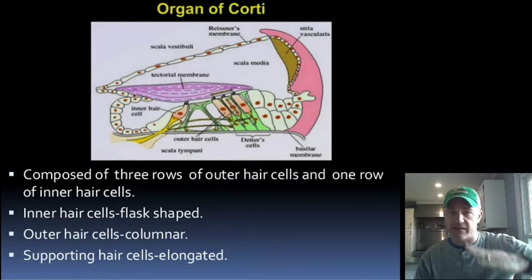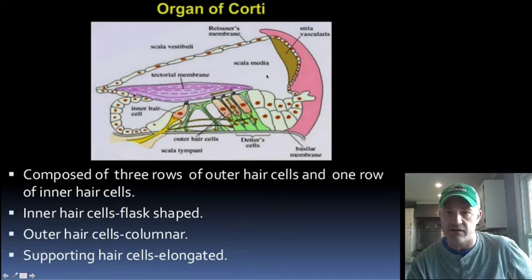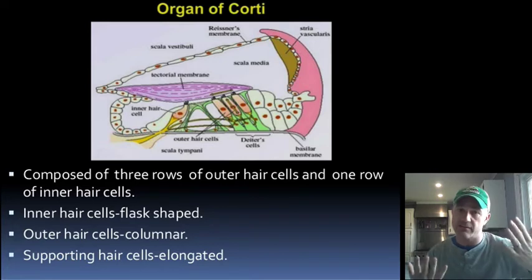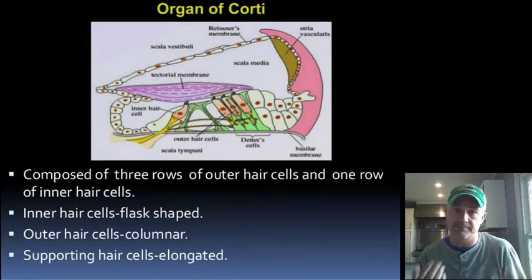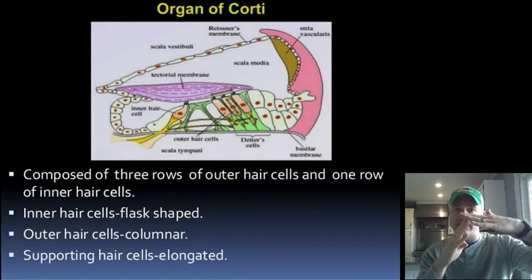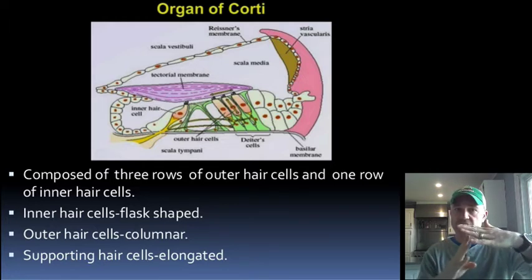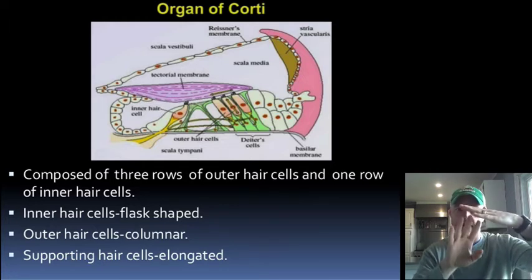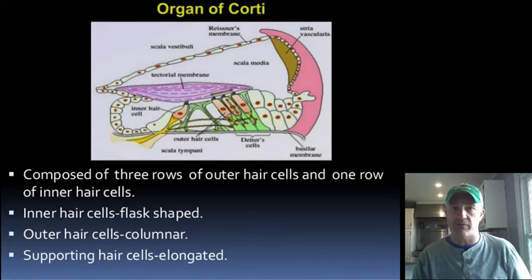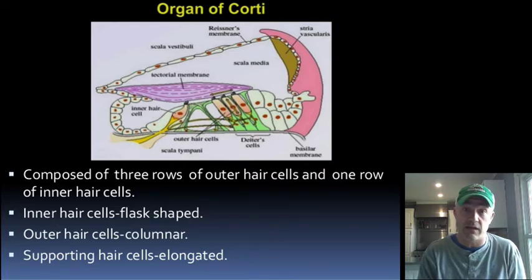The hair cells have structures called kinocilia, which are like large microvilli. The tectorial membrane sits against those. When sound vibrations travel, it causes the basilar membrane to bend and pushes these hair cells up into the tectorial membrane. That is what brings about a nerve impulse and causes you to perceive sound.